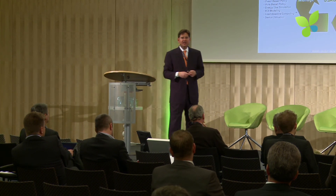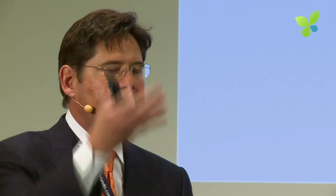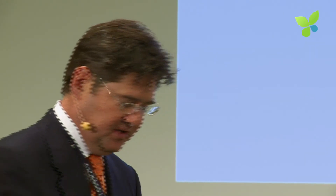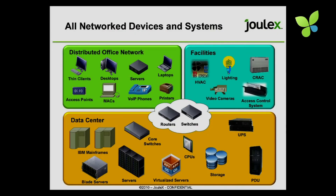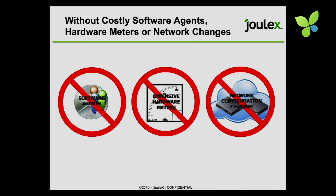Julex turns on and off devices when they're not being used, or lowers and raises their power. We don't live in a black and white world anymore — every single device has the ability to be power-stated to different levels. Most importantly, Julex is IP and device agnostic, meaning we don't care what's connected to the end of that network. We don't install any software agents, so we're just remotely monitoring, and there's almost an infinite number of devices being plugged into networks today.